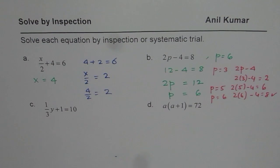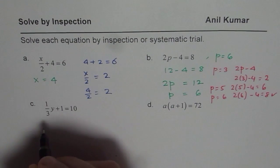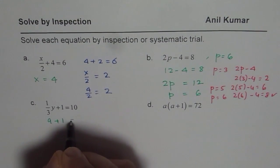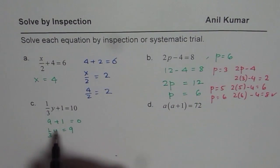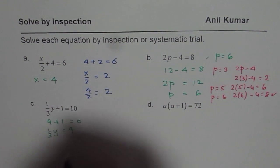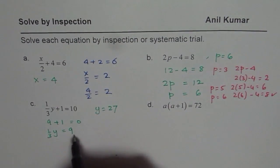Now the next question here is, 1 third of a number plus 1 is 10. So what we are saying is, 1 third of a number plus 1 is 10. But 1 plus what is 10? We know 9 plus 1 is 10. That means 1 third of a number is 9. So what should the number be? That means y should be 27. 1 third of 27 is 9. So likewise, we can get our result. I hope you appreciate this method. So this is the method of inspection.